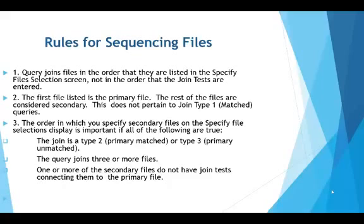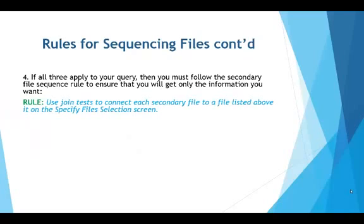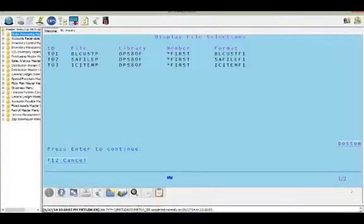Third, the order in which you specify secondary files on the specify file selections display is important if all the following are true: the join is a type 2 (primary match) or type 3 (primary unmatched), the query joins three or more files, and one or more secondary files do not have a join test connecting them to the primary file. If all three apply, you must follow the secondary file sequence rule to ensure you get only the information you want.